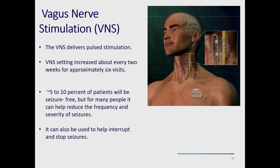The vagus nerve stimulator (VNS) is a medical device that does not necessarily require intracranial monitoring. It is placed in the chest area; the battery generator is placed there, with a wire and coil that goes around the vagus nerve on the left side above the clavicle. The VNS delivers pulsed stimulation around the clock, 24 hours a day, after placement in the operating room.